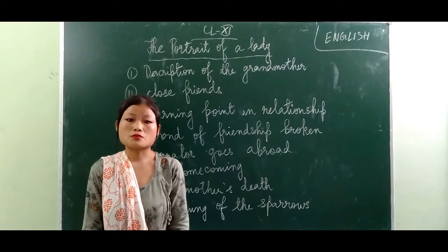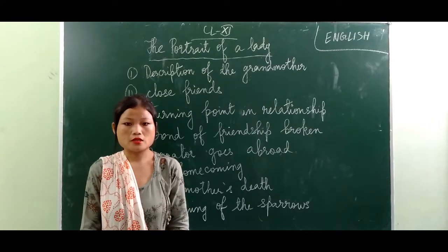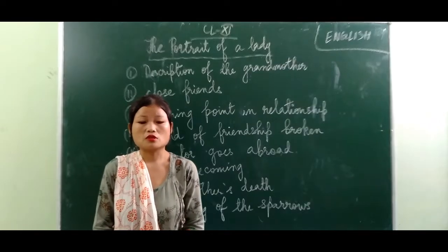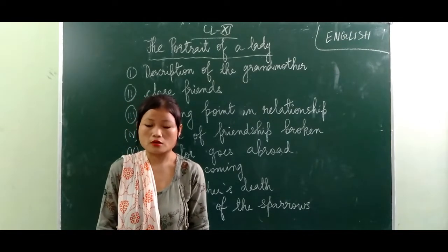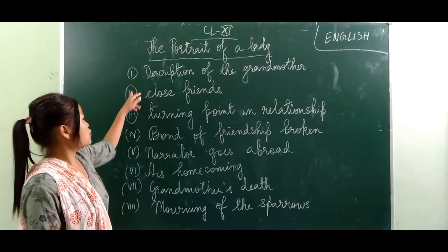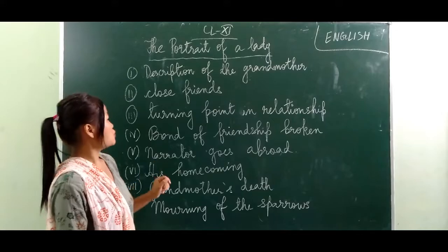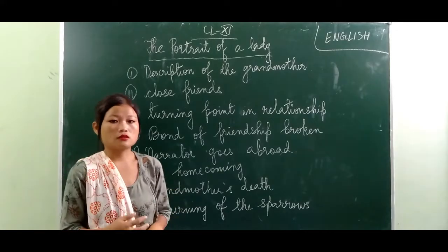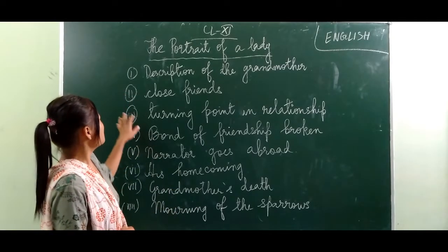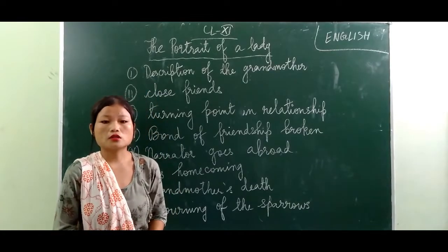As it is not possible for me to open the book and read paragraph by paragraph, I'm going to explain the important points one by one. I have written down the points here. Point number one is the description of the grandmother.